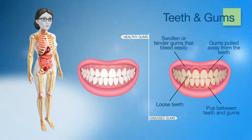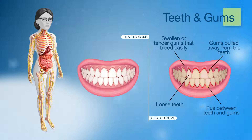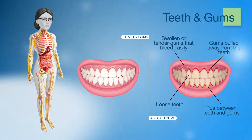Gum disease can occur as a result of inflammation caused by elevated blood glucose levels, creating an ideal environment for bacteria to build up and increasing your risk of gum infections. Gingivitis is the most common form of gum disease, caused by the build-up of bacteria in plaque. If left untreated, it may progress to a more serious gum disease called periodontitis, which involves inflammation and infection leading to weakening of the tooth socket.